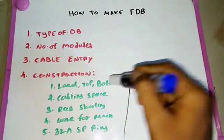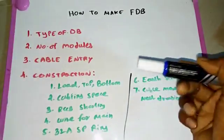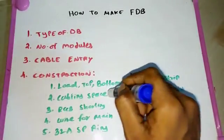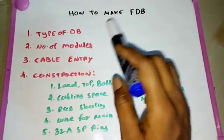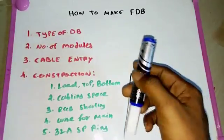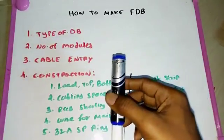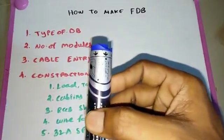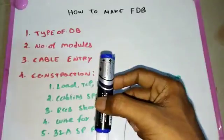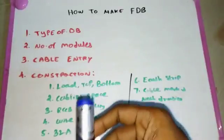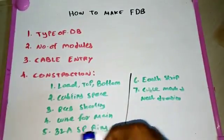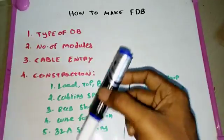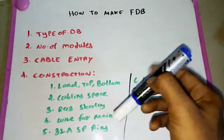Cable spacing is also very important. If the isolator is mounted at the bottom, we need to leave sufficient space at the bottom for the incoming cable and also for the outgoing cables. This cable spacing must be carefully considered during construction.